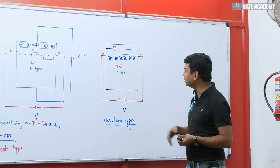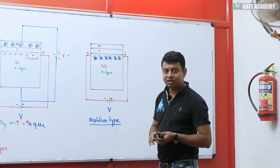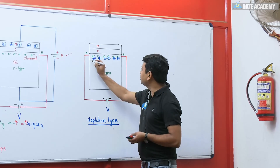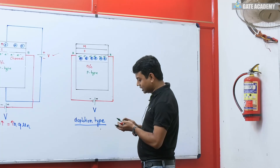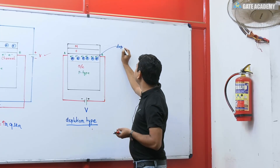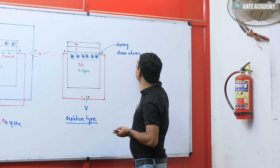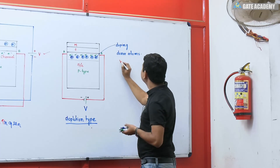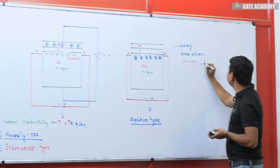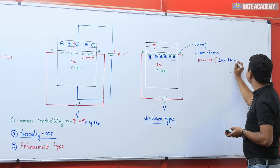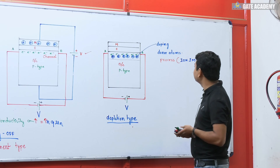Before going to why it is called depletion type MOSFET, analyze the structure I have drawn. In a certain area, you can see electrons with ions — in this area, doping has been done. Donor atoms have been doped. The process used is ion implantation. You can refer to the IC fabrication link I will provide. Ion implantation is used for this doping process.